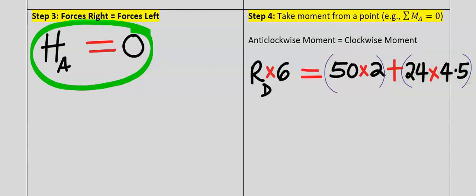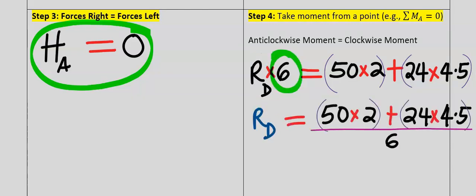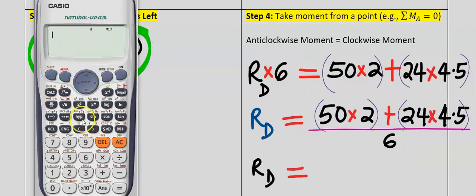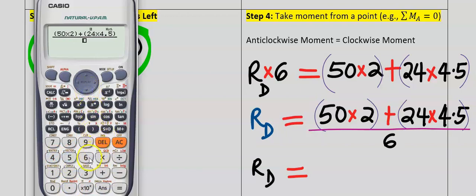We isolate the reaction force at point D by making it the subject of the equation. The 6 meters moves across the equal sign to divide. Using a calculator: divide (50 × 2) + (24 × 4.5) by 6. Changing to decimal, the answer is 34.67 kilonewtons to two decimal places.